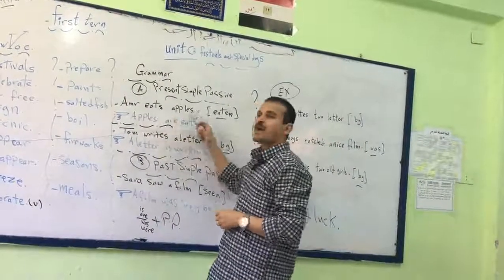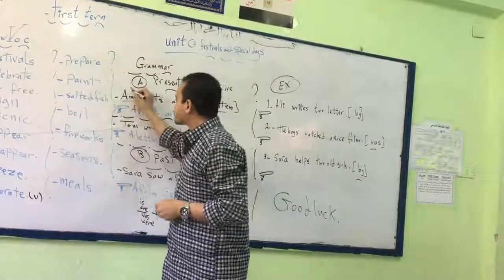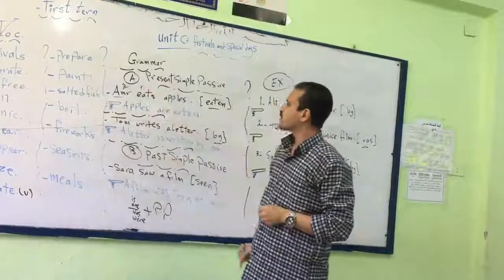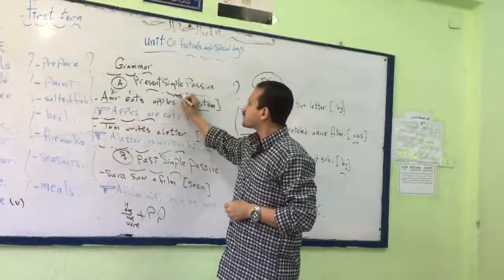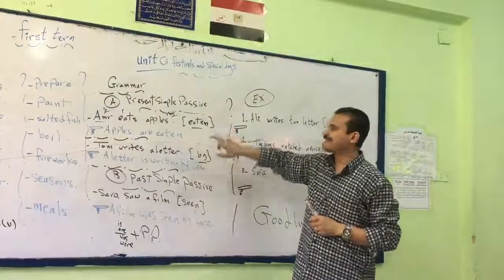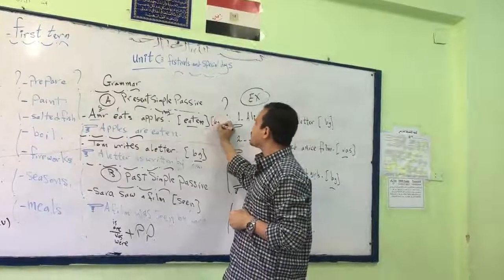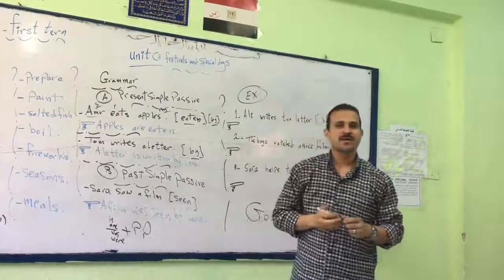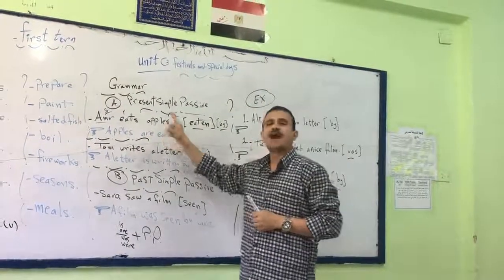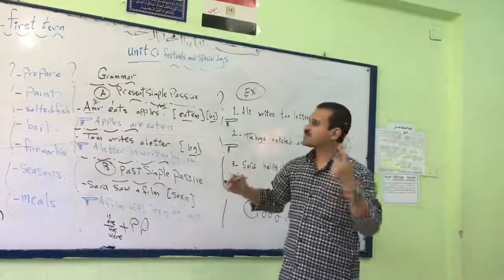Un eats apples. Now, here Un is the subject of the verb, and this is the verb, this is the object. If I ask you to use eaten, or if I ask you to use by, or if I ask you to begin with apples - all these questions, the answer is one.